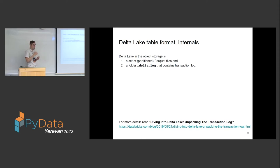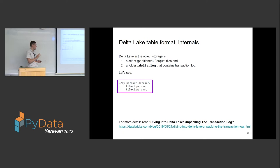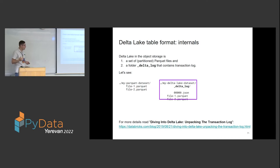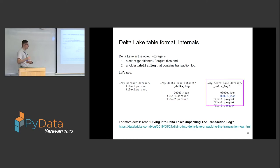With a traditional Parquet dataset you'd have some location with Parquet files. But with Delta Lake you also have a delta folder containing a list of JSON files, where every JSON file represents one commit. A commit could be an insertion, an update, a deletion, or even a change of the table schema — like an ALTER TABLE in SQL. Each commit records which files were added and which were removed. By reading this metadata, the reader can infer the current state of the Delta Lake table and exactly which Parquet files it needs to read.